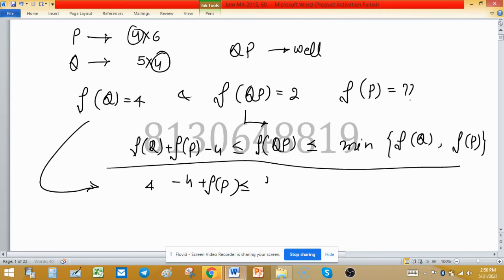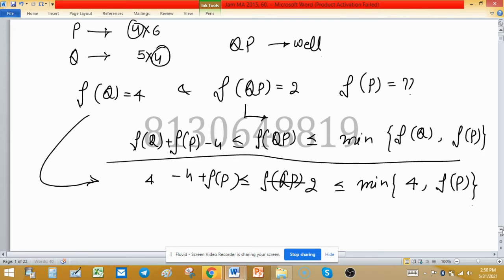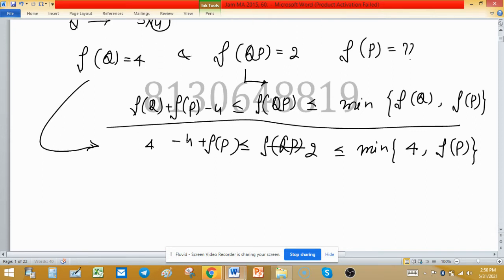So we have rank of QP which is 2, so we can put 2 here. And this equals minimum of rank of P and rank of Q. Rank of Q is 4 and rank of P we need to find. Now we have this relation equal to minus 4, so subtraction will give you 0.